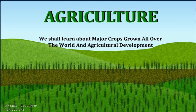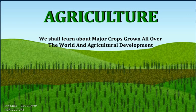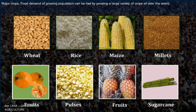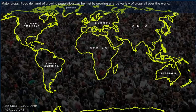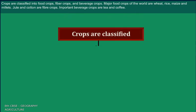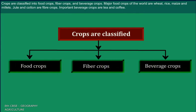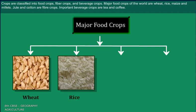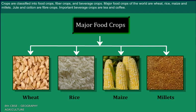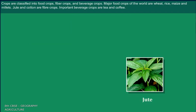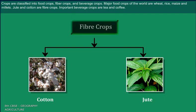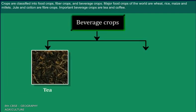We shall learn about major crops grown all over the world and agricultural development. The food demand of a growing population can be met by growing a large variety of crops. Crops are classified into food crops, fiber crops, and beverage crops. Major food crops of the world are wheat, rice, maize, and millets. Jute and cotton are fiber crops. Important beverage crops are tea and coffee.